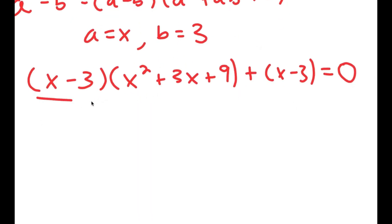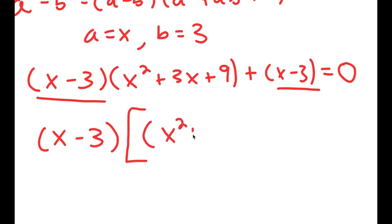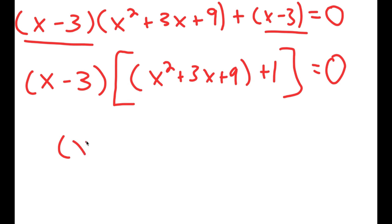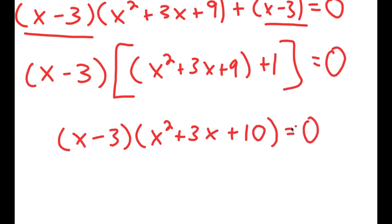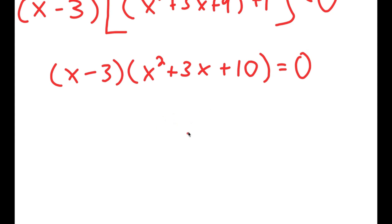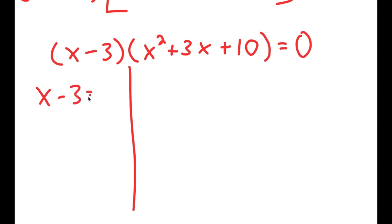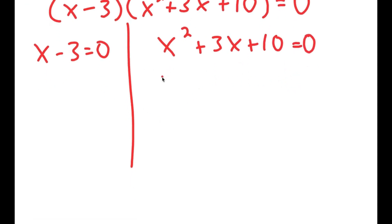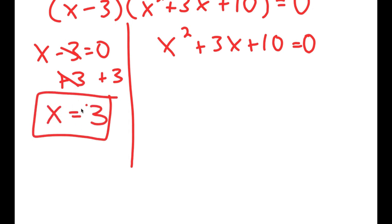Notice how both of these terms have x minus 3 in them, so I'm going to factor out x minus 3. I get x minus 3 times x squared plus 3x plus 9 plus 1 is equal to 0, which simplifies to x minus 3 times x squared plus 3x plus 10 is equal to 0. From this, I have two equations: x minus 3 equals 0, and x squared plus 3x plus 10 equals 0. For x minus 3 equals 0, all I have to do is add 3 on both sides, so I get x is equal to 3. This is one solution.